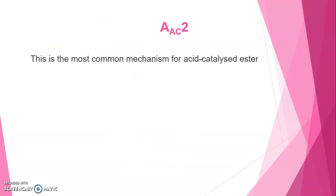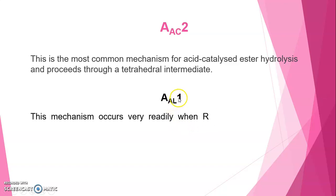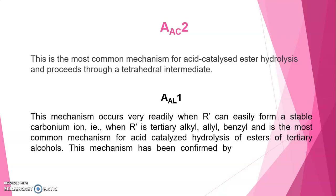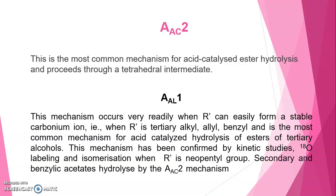Next, AC2 type mechanism: This is the most common mechanism for acid catalyzed ester hydrolysis and proceeds with tetrahedral intermediate. Next, AL1 mechanism: This mechanism occurs very readily when R dash can easily form a stable carbonium ion, that is when R dash is tertiary, allyl, or benzyl. And this is the most common mechanism for acid catalyzed hydrolysis of tertiary carbonyl. This mechanism has been confirmed by kinetics studies, oxygen labeling, and isomerization. When R dash is an open group, secondary and eventually acetates hydrolyze by AC2 mechanism in dilute sulfuric acid, but the mechanism is AL1 in concentrated sulfuric acid.